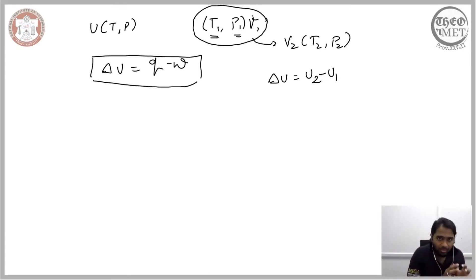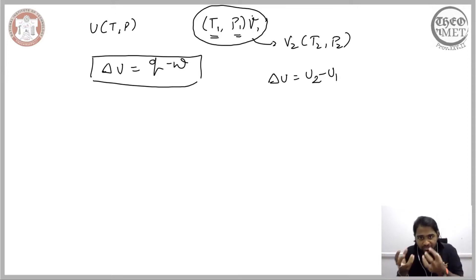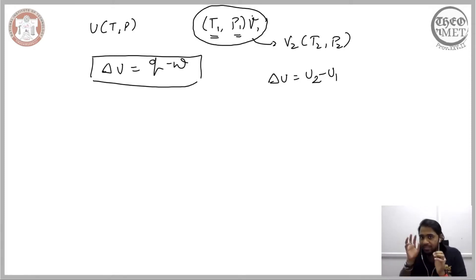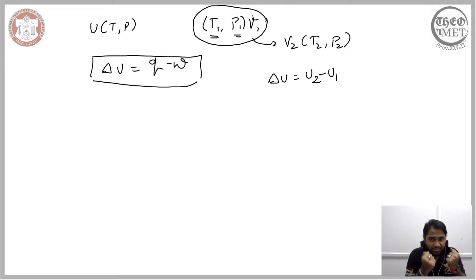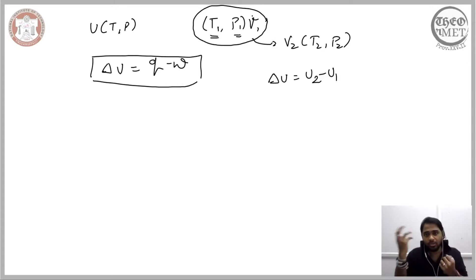What we did not consider is: what do we mean when the system is in equilibrium? What happens when a system moves from one state to another? Is there a thermodynamic variable that helps us understand why a system is in its stable state? These are open questions. We are now looking at the assumptions made from the first law and trying to understand equilibrium and stability, and how the system progresses from one equilibrium state to another.